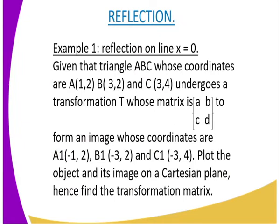Example one: Reflection on the line X equals zero. Given that triangle ABC has coordinates A(1,2), B(3,2), and C(3,4), and undergoes a transformation T whose matrix is represented by [A, B; C, D], we are to find the image with coordinates A1(-1,2), B1(-3,2), and C1(-3,4). You are required to plot the object and its image on a Cartesian plane, and hence find the transformation matrix.